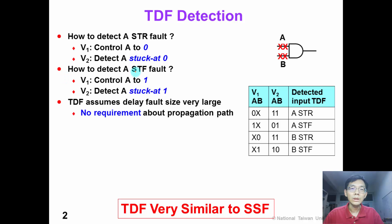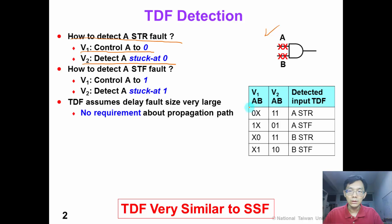First, we need to define the detection of a transition delay fault. Consider this two-input AND gate. How are we going to detect input A slow-to-rise fault? In vector 1, we control A to 0, and then in vector 2, we generate a test to detect A stuck-at-0 fault. This table shows the input pattern to detect the input transition delay fault of this AND gate.